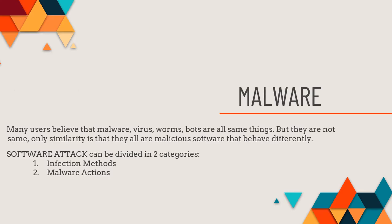Many users believe that malware, viruses, worms, and bots are all the same thing, but they are not. They have only one similarity: they all have malicious intent. However, they behave very differently — their modes of attack are very different and their purposes are also very different. Software attacks can be divided into two categories: infection methods and malware actions.